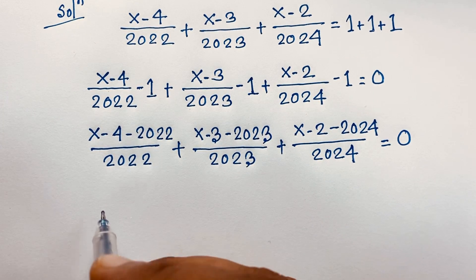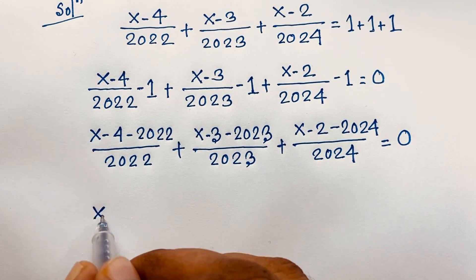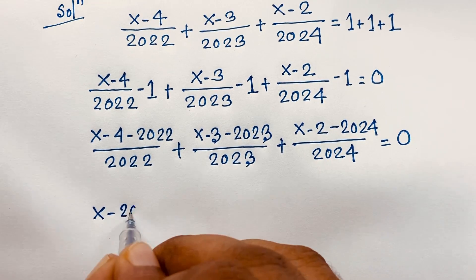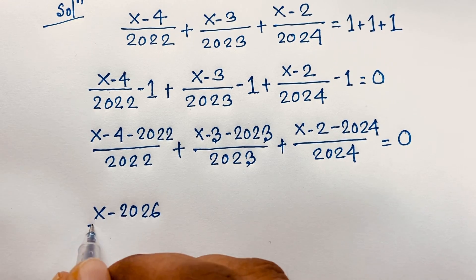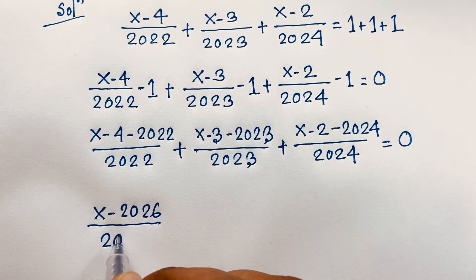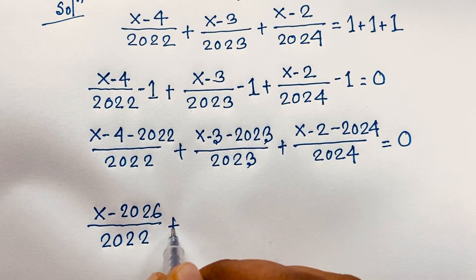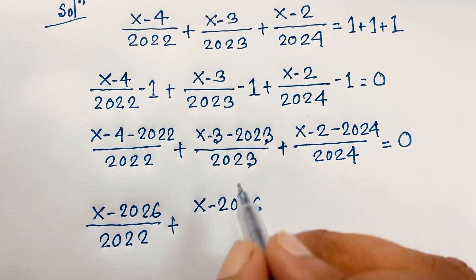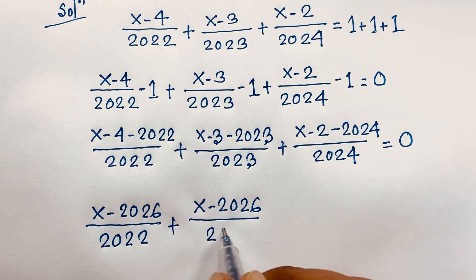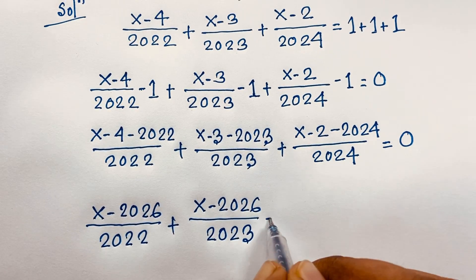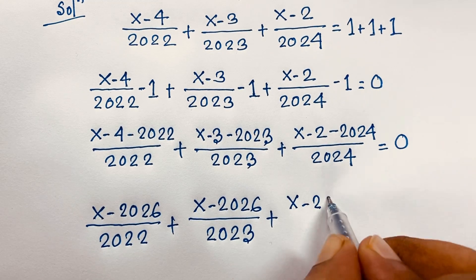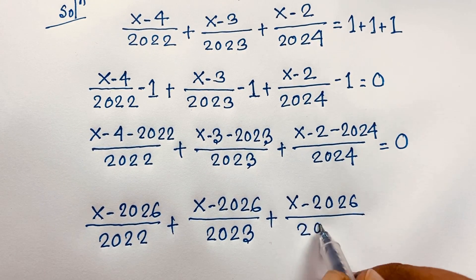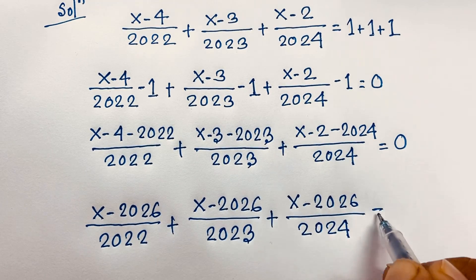Simplifying the numerators: x minus 4 minus 2022 gives x minus 2026, x minus 3 minus 2023 gives x minus 2026, and x minus 2 minus 2024 also gives x minus 2026. So the equation becomes (x minus 2026) over 2022 plus (x minus 2026) over 2023 plus (x minus 2026) over 2024 equals 0.